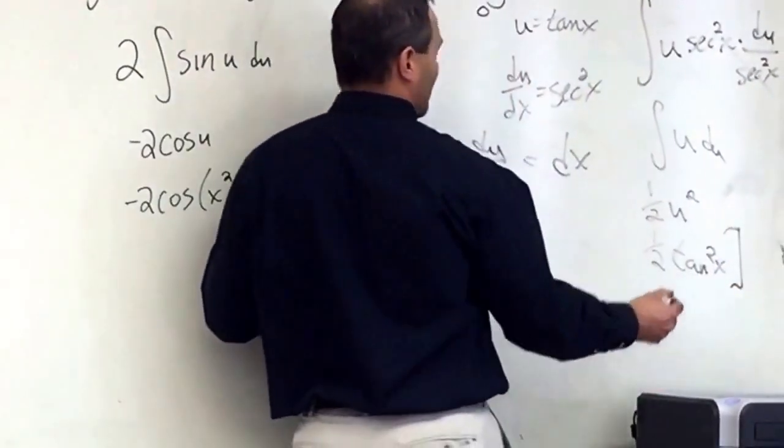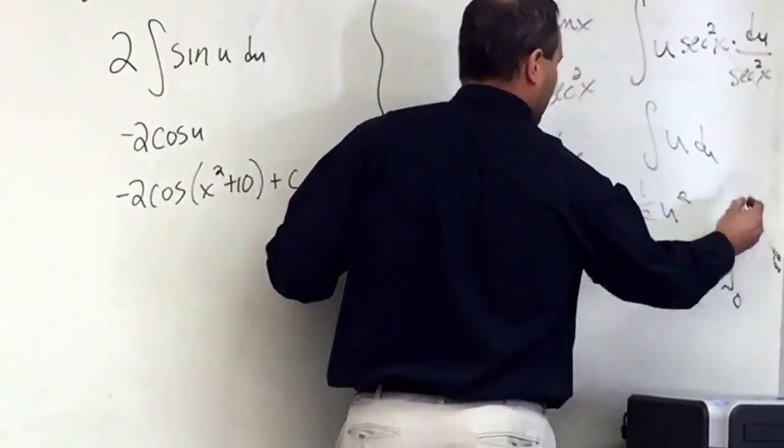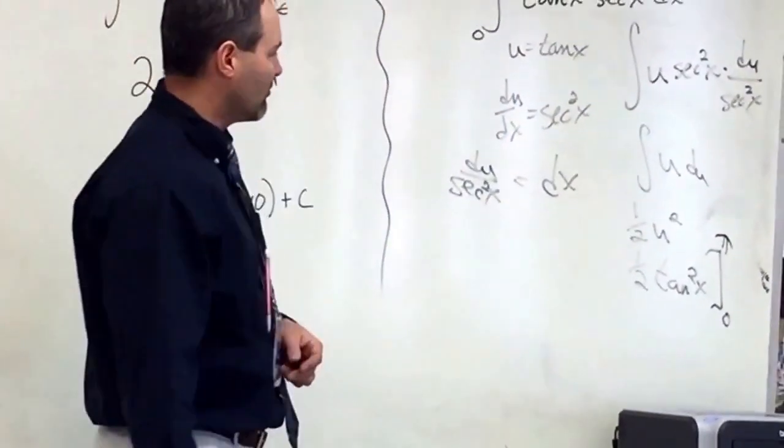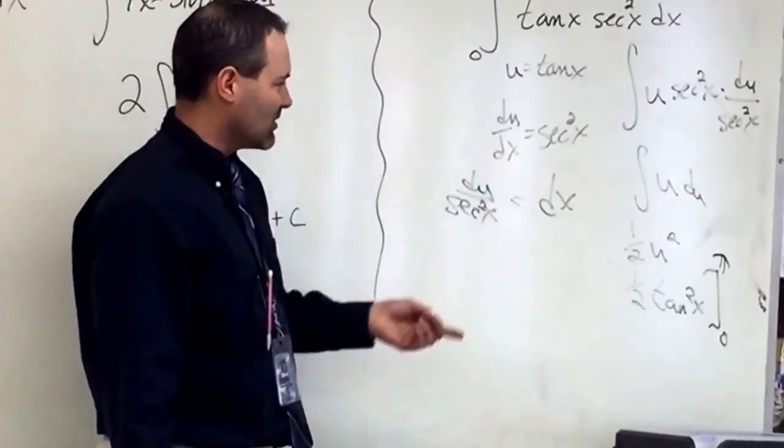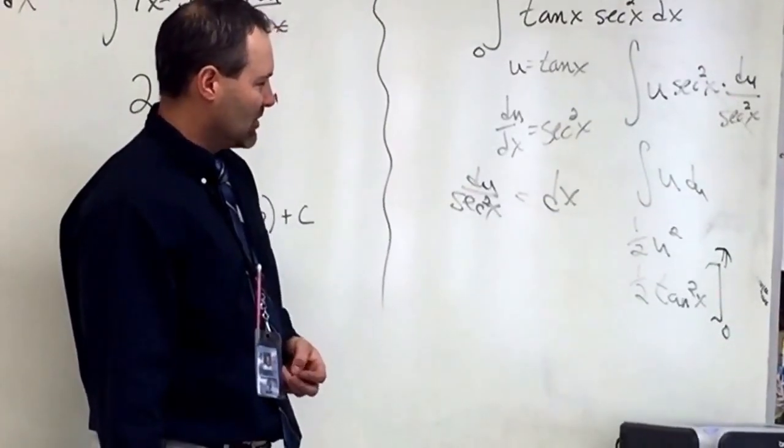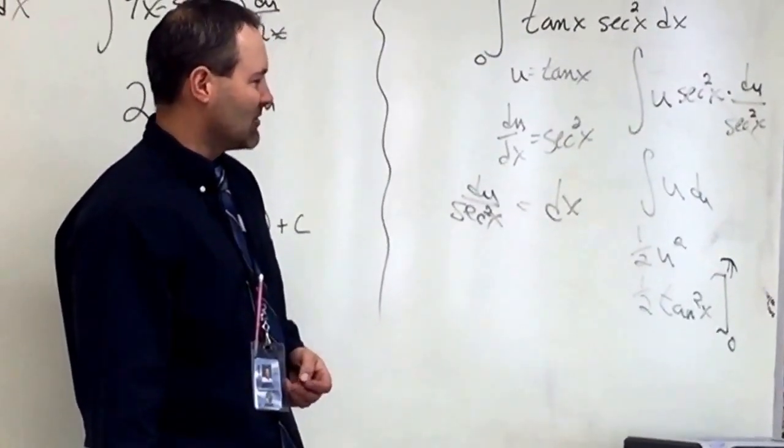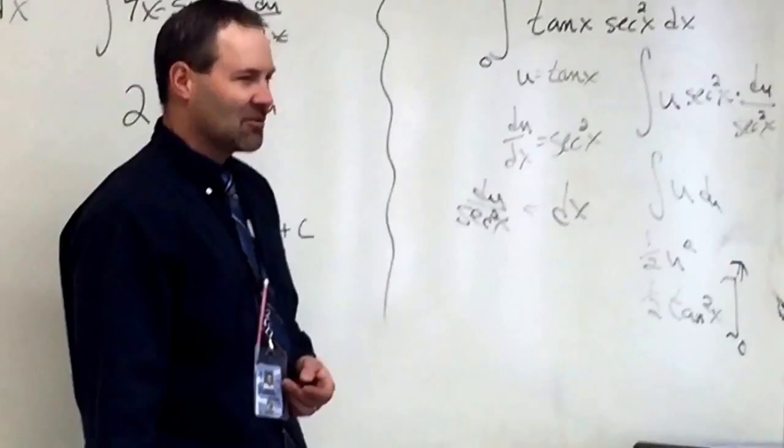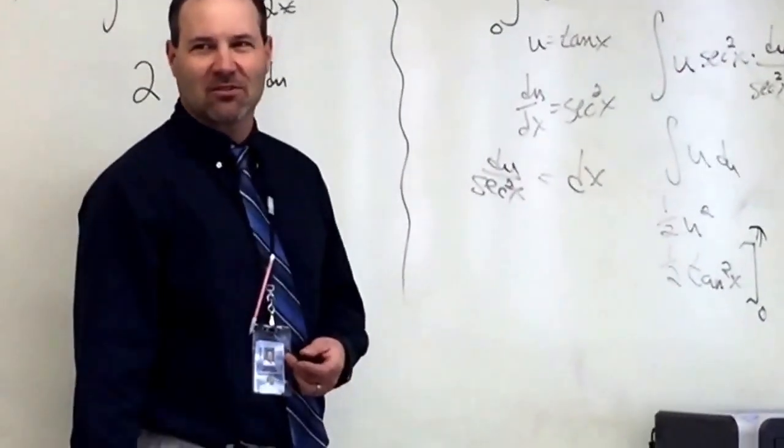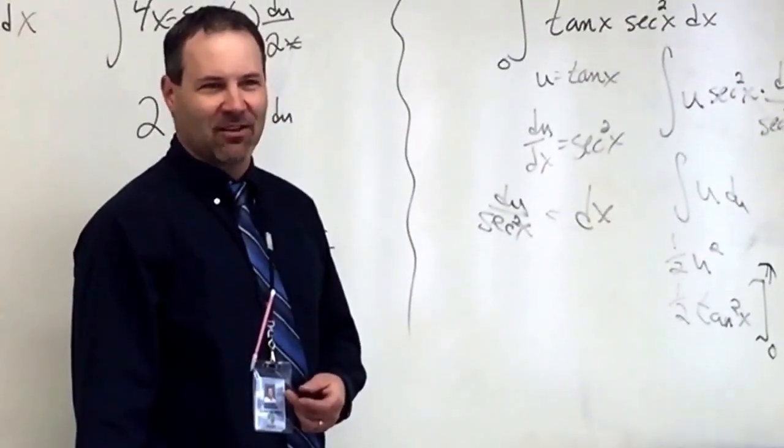And we're going to evaluate it from 0 to pi, which are dumb boundaries of integration because tangent of pi is 0. Tangent of 0 is 0. We get 0 minus 0, which is 0. Isn't that fun?